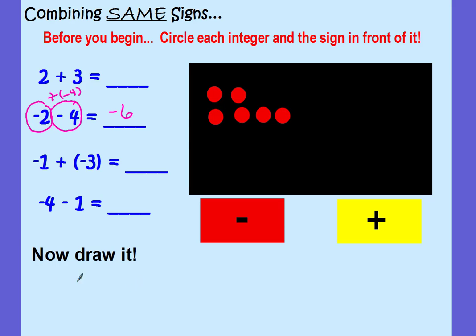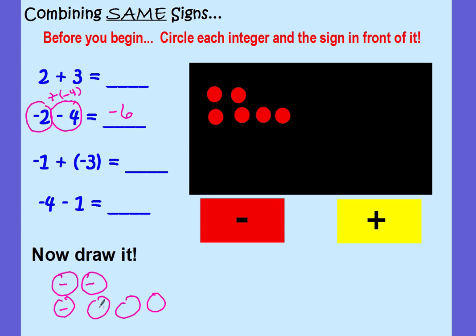Let's model it. You can draw a circle to represent the integer chip — since we're talking negatives, just put the negative symbol inside. Our first number is negative 2 and our second number is negative 4. Or if you don't want to draw the circles, you could just do the negative symbols. Either way, you're still going to get negative 6.